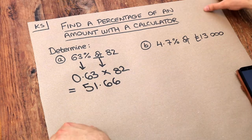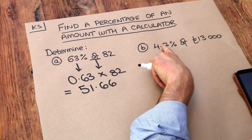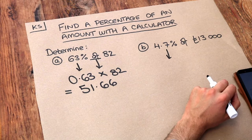What about the second one? 4.7% of 13,000. Well, again we just need to convert this percentage to a decimal by dividing by 100.